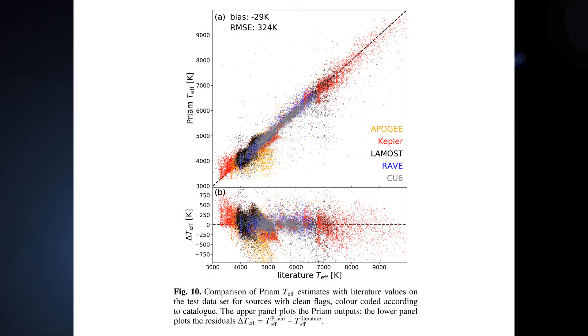In figure 10 of the paper, you get some idea of the precision of the temperature estimates we achieve. PRIAM — the name of our software module for estimating temperatures — is shown as a function of literature temperature estimates. This is where we derive our global uncertainty of 324 Kelvin with a bias of about minus 29 Kelvin, though this is only for the validation data sample. The temperatures we estimate lie only between 3,000 and 10,000 Kelvin, so any star outside this range will have its temperature clipped into this range, giving a bias for truly hotter or cooler stars.